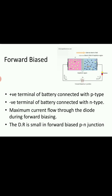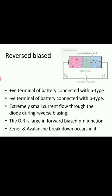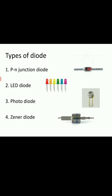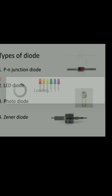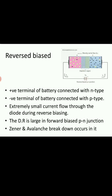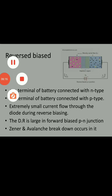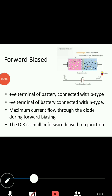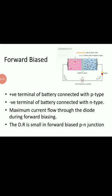We can see the V-I characteristics diagram of forward bias, and after that we will see reverse bias. Just wait a minute — because I have converted it to PPT, but the PPT is not being shared on mobile. Zoom is only able to share PDF or image files. So we will see the diagram tomorrow.